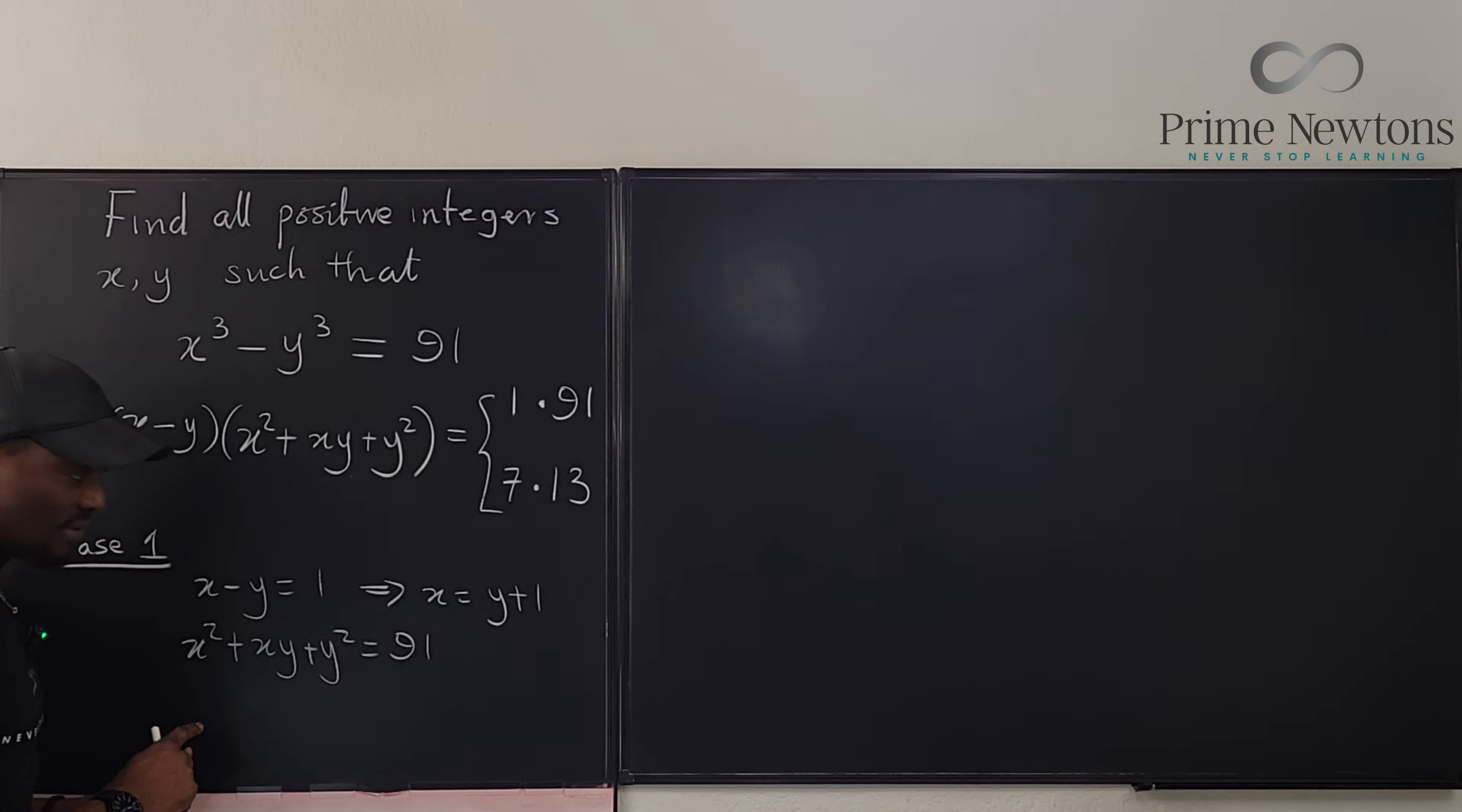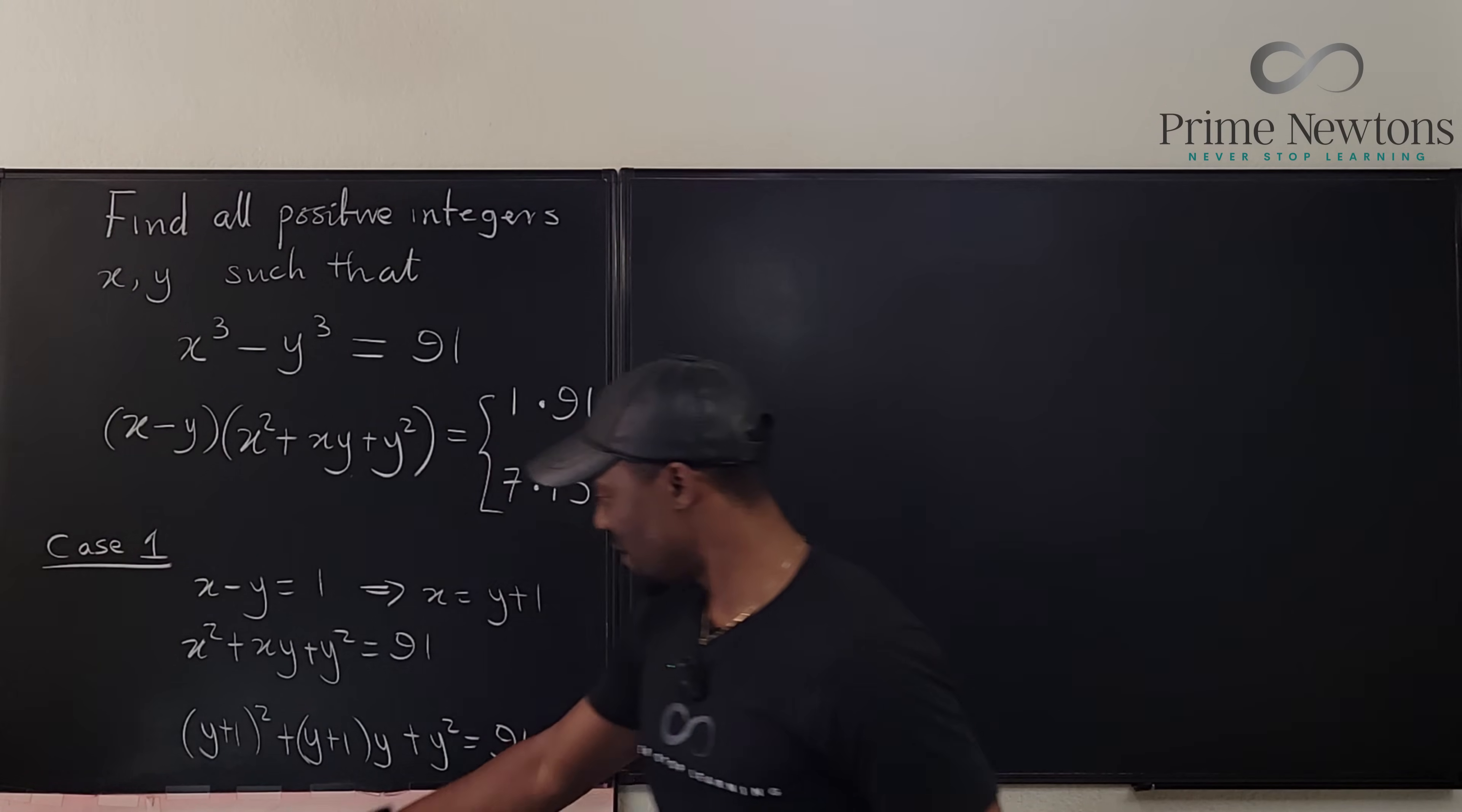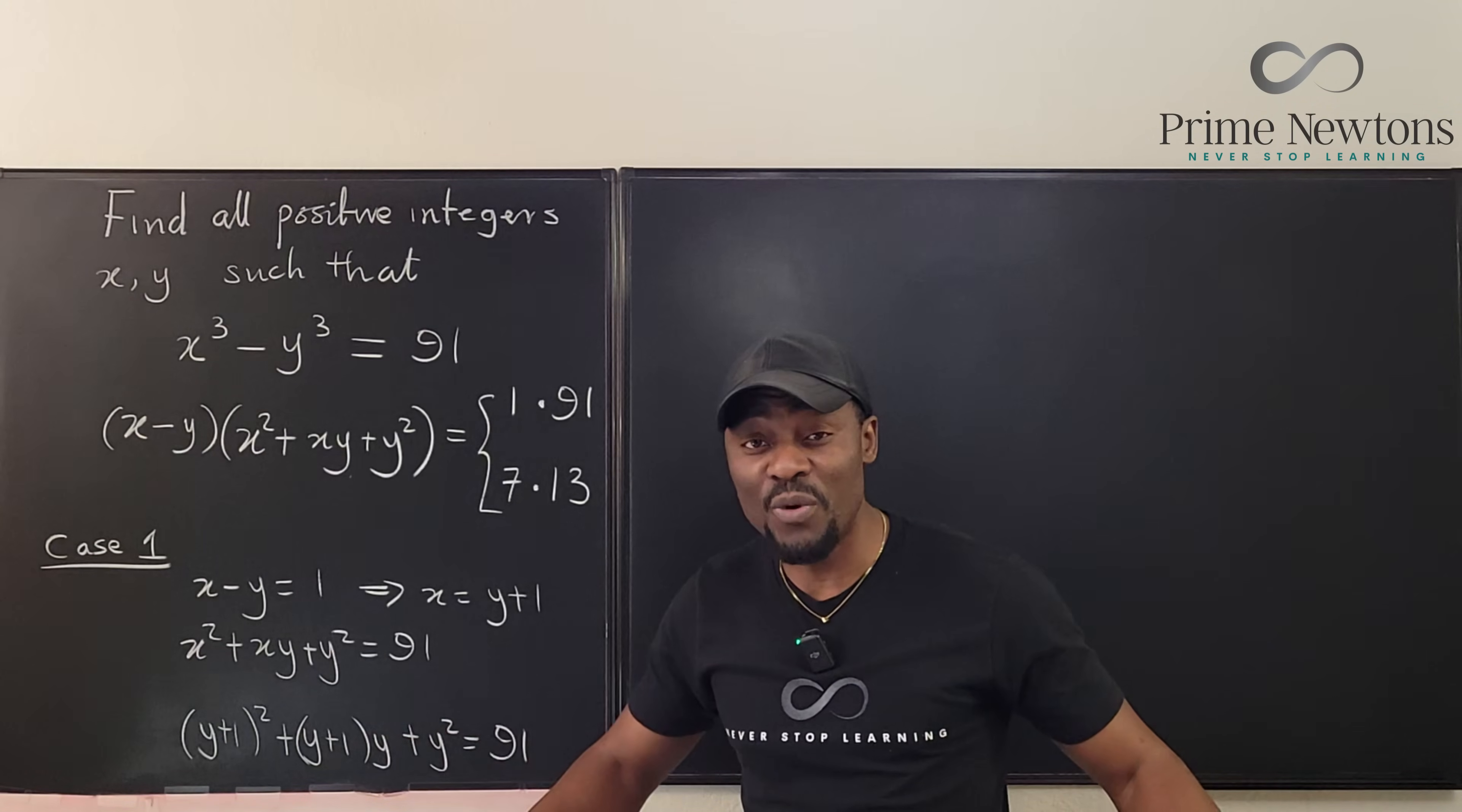So we can go to this equation and say, what can we do? Well, let's replace x with y plus 1. So we're going to have y plus 1 squared plus y plus 1 times y plus y squared equals 91. So this is the equation I need to solve. It's all in terms of y.